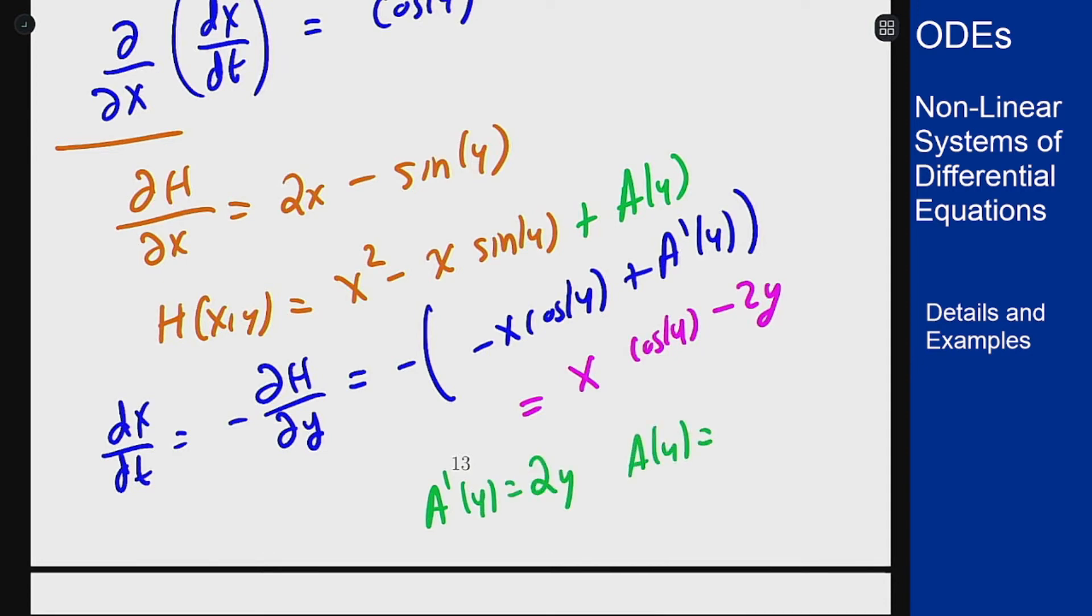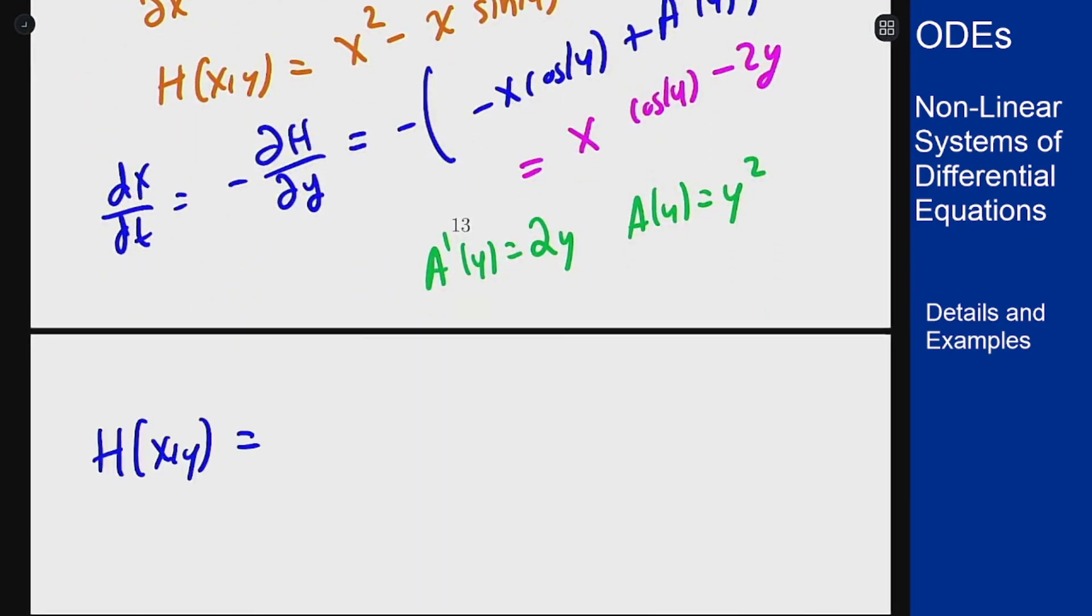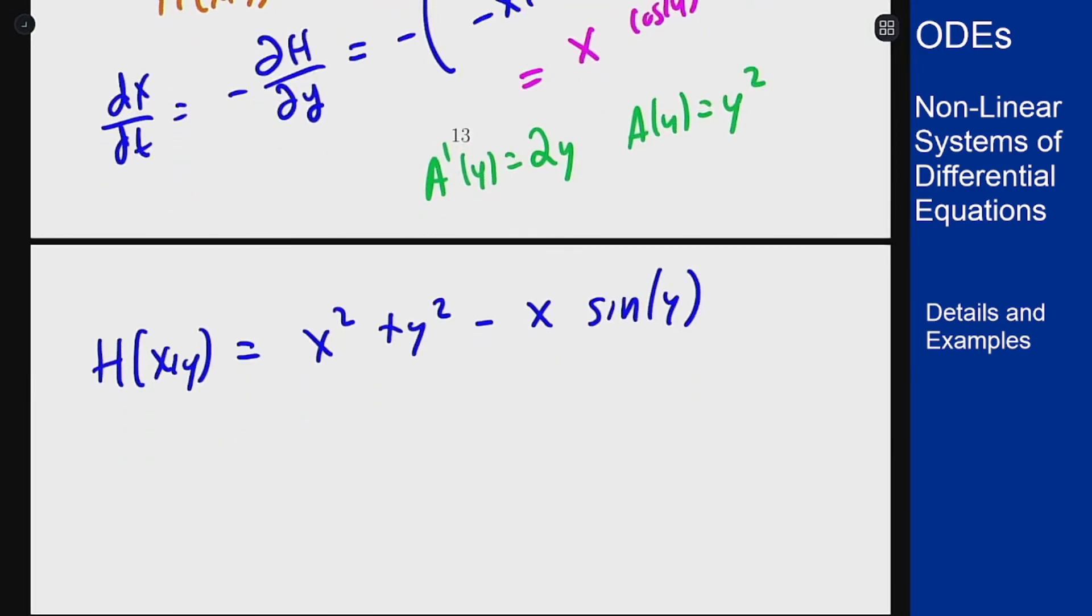So a of y is y squared, and plugging that back into here gives me that my Hamiltonian is x squared plus y squared minus x sine of y. And now what this tells me is it tells me the trajectories of this system, because functions that solve this will obey x squared plus y squared minus x sine of y equals c for some value of c depending on the initial condition.